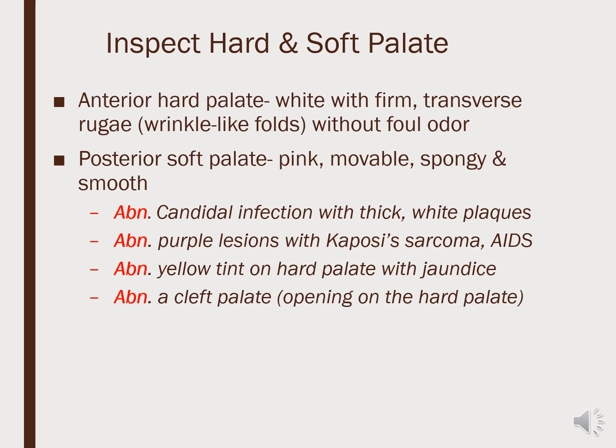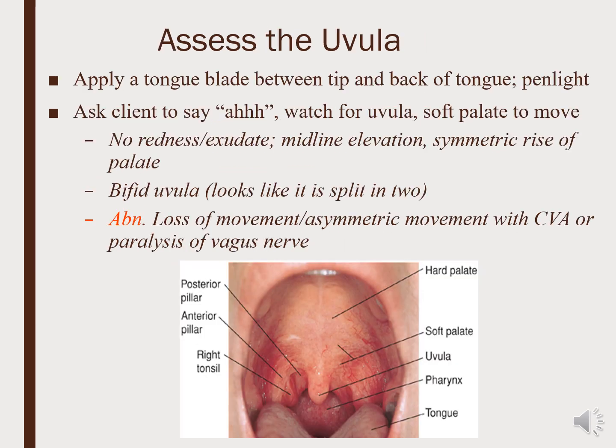When we assess the uvula, we are looking for the small protrusion of tissue in the soft palate at the back of the throat. When the patient says 'ah,' that tissue should rise symmetrically. We expect no redness or exudate and a symmetric rise. If there is loss of movement or asymmetric movement of the uvula, we may relate that to cranial nerve 9 or 10.